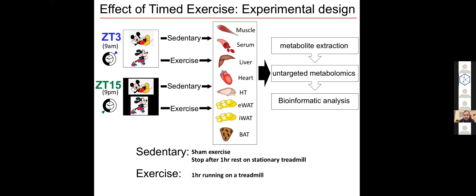To see how these tissues are independently or collectively responding to exercise when it's performed at different times of the day, we investigated the impact of one hour bout of timed exercise of mouse running on a treadmill and looked at the impact of this on the metabolite levels in these different tissues.